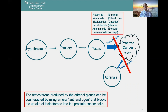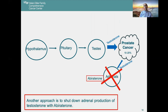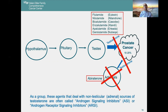One way is to use an oral antiandrogen that blocks the uptake of testosterone into prostate cancer cells. There are first-generation agents — flutamide, nilutamide, and bicalutamide — and second-generation agents: enzalutamide, apalutamide, and darolutamide. An alternative approach is to block the production of testosterone by the adrenal glands using a drug called abiraterone. As a group, these agents are referred to as androgen signaling inhibitors, or ASIs — sometimes called androgen receptor signaling inhibitors.